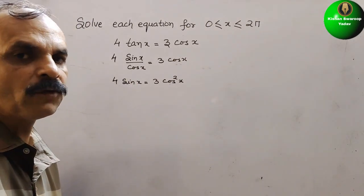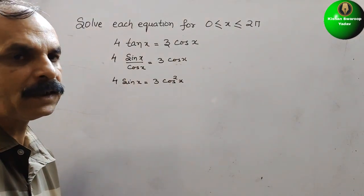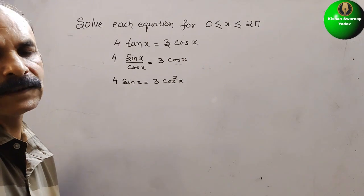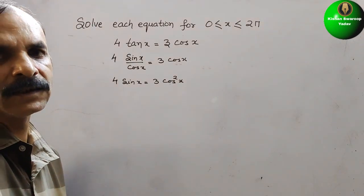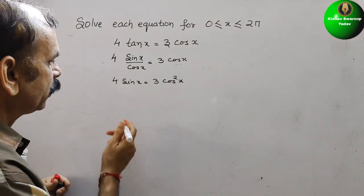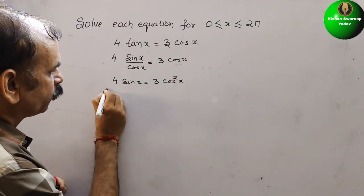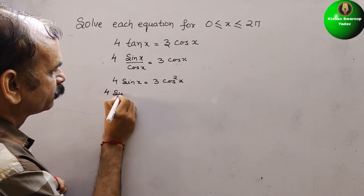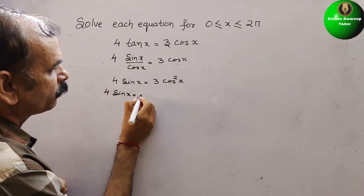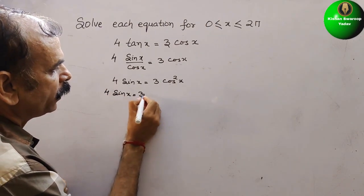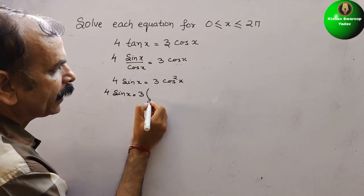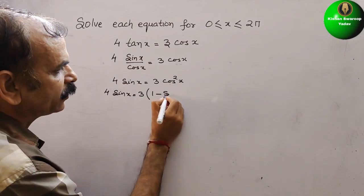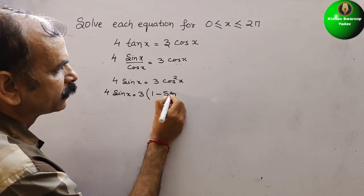So we will convert this cos²(x) into sin(x). That is nothing but 1 − sin²(x). So here we will write 4sin(x) = 3(1 − sin²(x)).